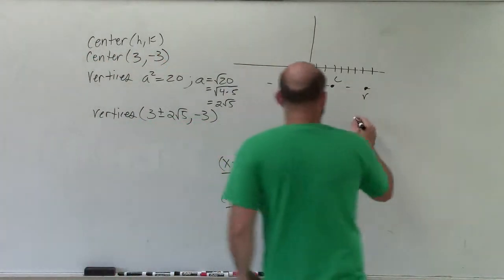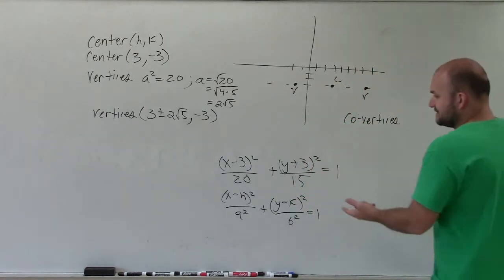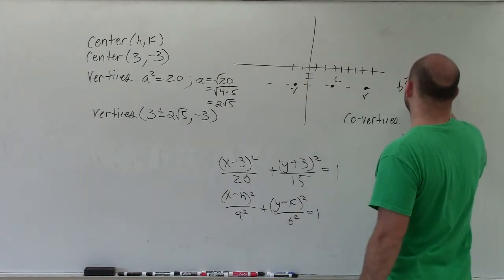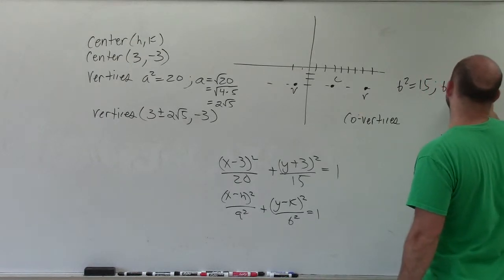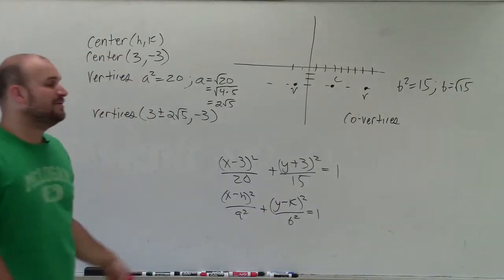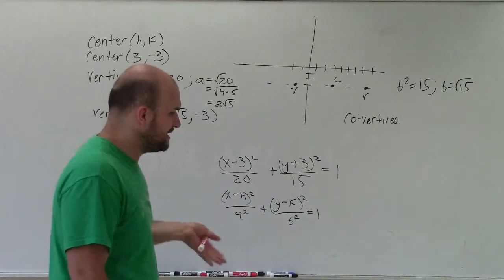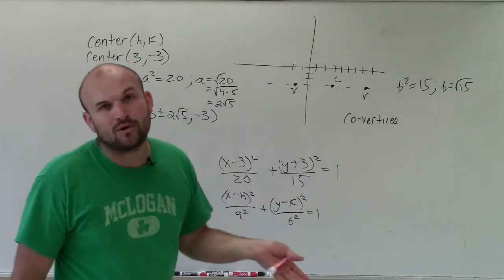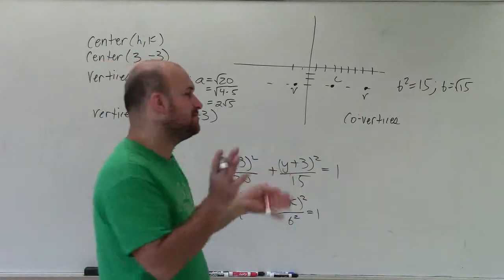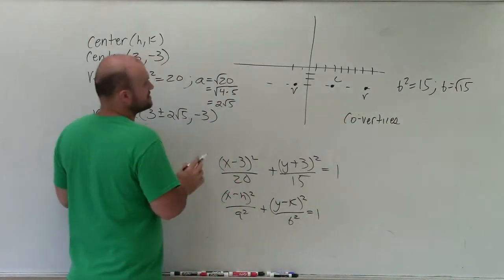Next thing, let's do the co-vertices. I'll put those over here. So the co-vertices have a distance of b. Well, b, another fun one, b squared equals 15. So therefore, b equals the square root of 15. Now, this one we can't simplify, which that's fine. But we still need to be able to identify what is the decimal version of that. Well, it's going to be anywhere between 3 and 4, because 3 squared is 9, 4 squared is 16. So it's going to be some decimal between 3 and 4.